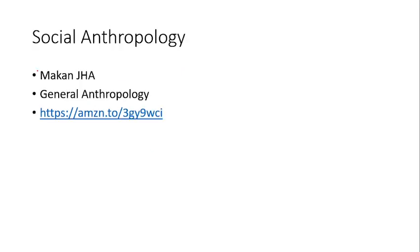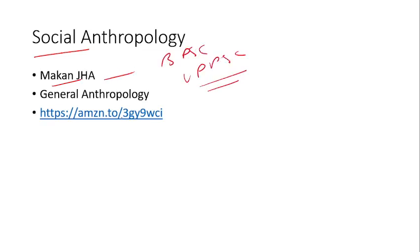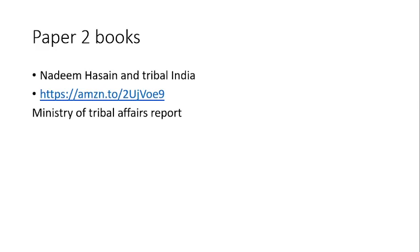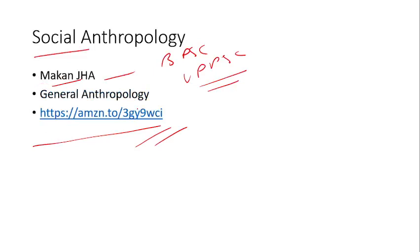Coming to social anthropology, there is Social Anthropology by Makhanja — I couldn't find the link but I have the book, and I will tell you the important chapters from it. You can still buy it; it is a very good book for BPSC and UPPSC. For General Anthropology, there is a book by Nadeem Hassan — General Anthropology — which is a very, really very good book; you can buy it from the link here. For Paper 2, there are two books: Nadeem Hassan's Indian Anthropology and Tribal India — do buy both. You also need to follow the Ministry of Tribal Affairs reports to get current affairs data. There is also another book — Nadeem Hassan's Indian Society — that link is also here; that book is also very good.